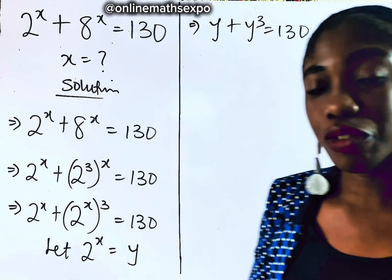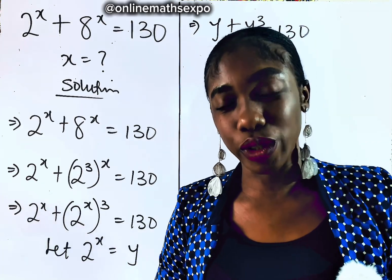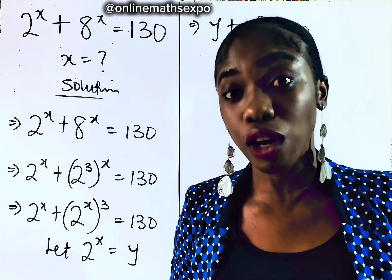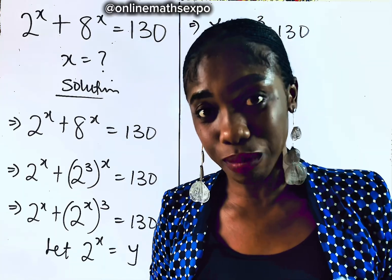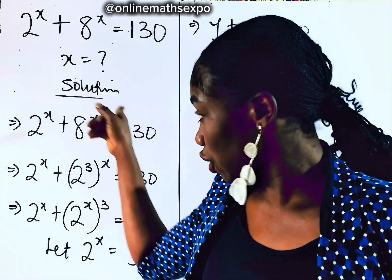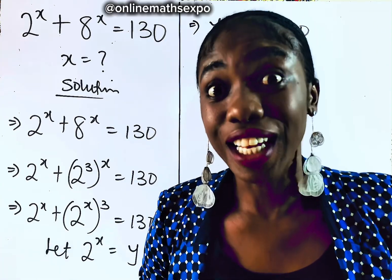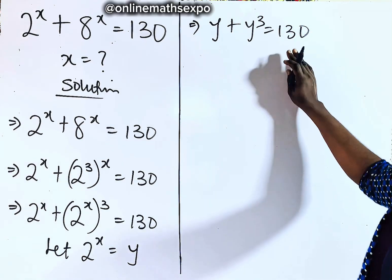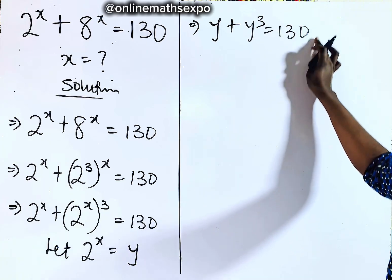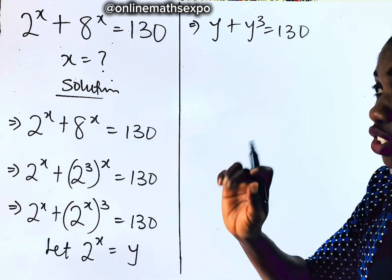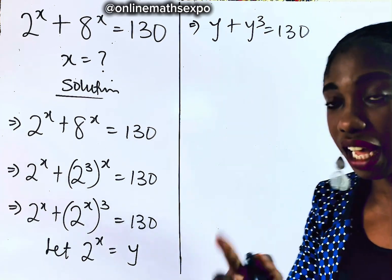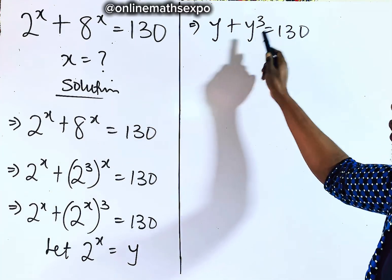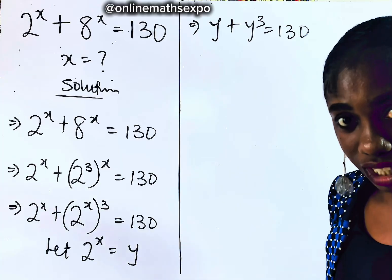At this point there are a lot of methods you can use to solve this equation. I'm going to show you how to do this using the factorization method — and if you want to learn using the long division method, I will leave a link in the comment section. For factorization, we need to rewrite 130 by finding a number such that when we cube it and add the number to its cube, we get 130.